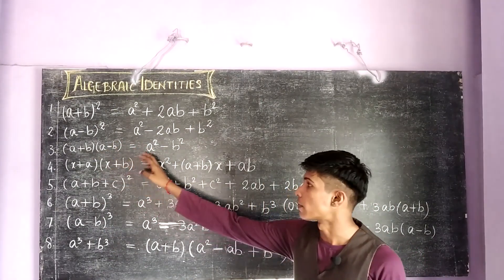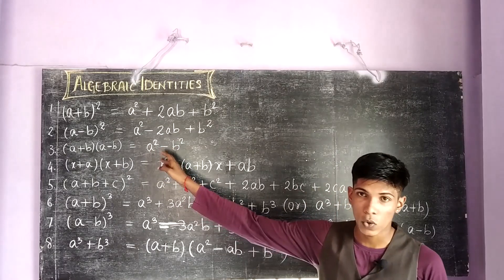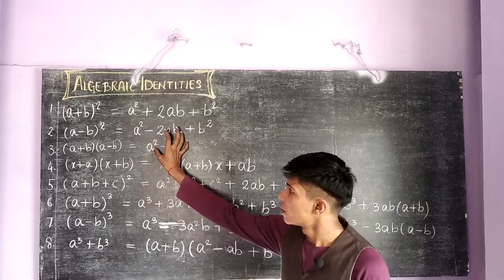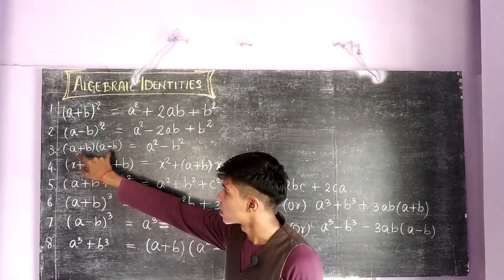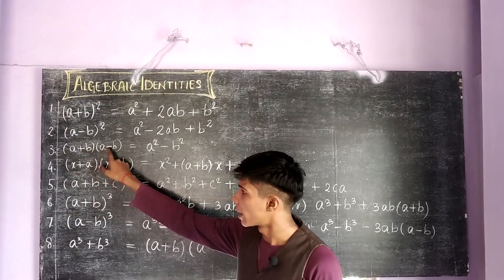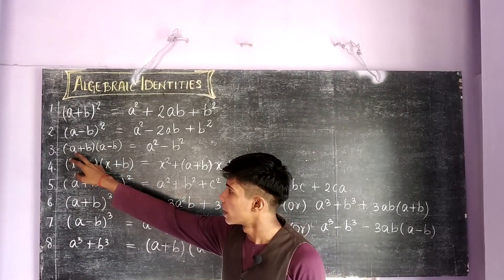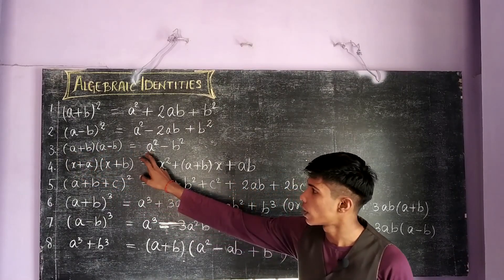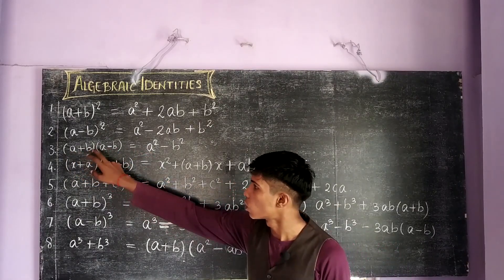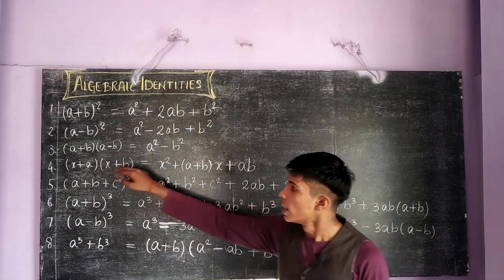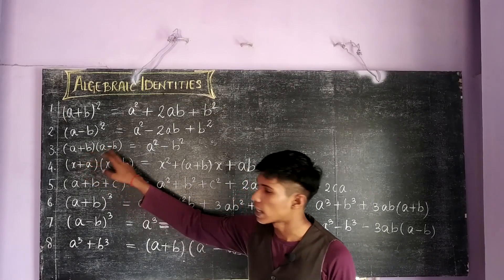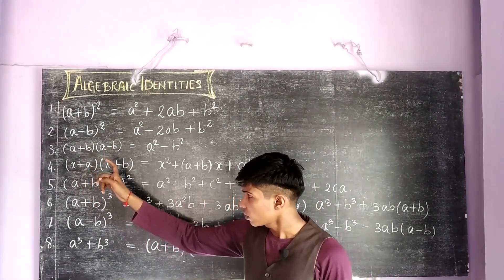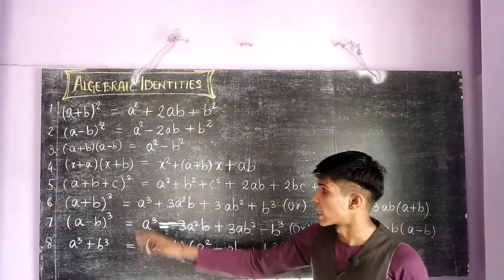The third identity which we are going to discuss now is a plus b into a minus b, which gives us a square minus b square. This is derived from a plus b into a minus b. When we multiply these two terms individually, a into a gives a square and b into minus b gives minus b square, and plus ab and minus ab get cancelled.